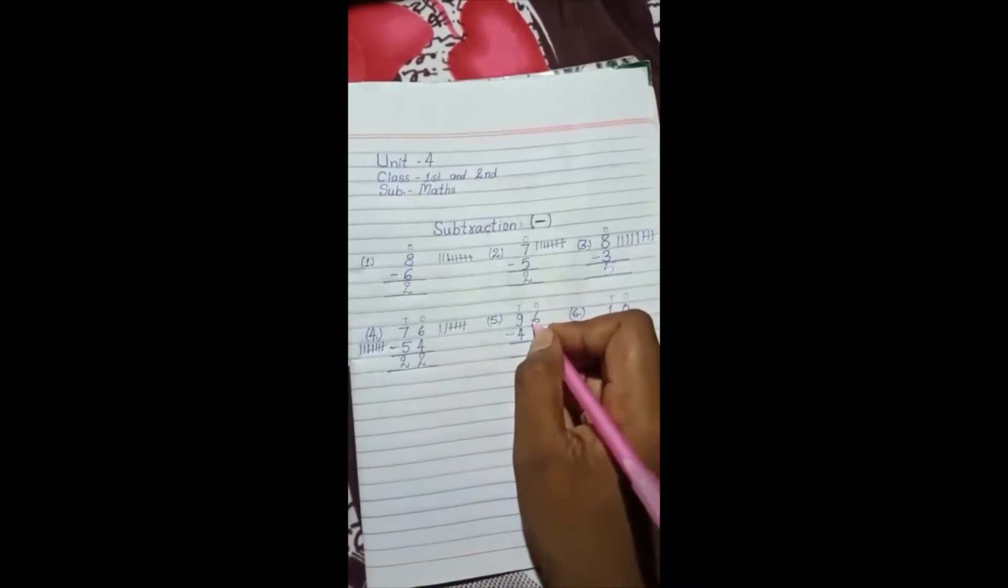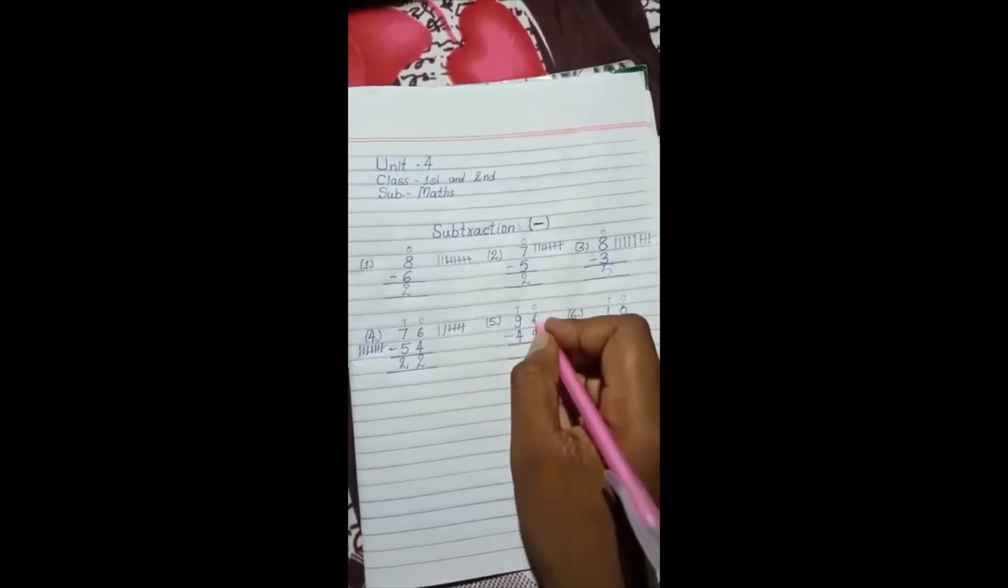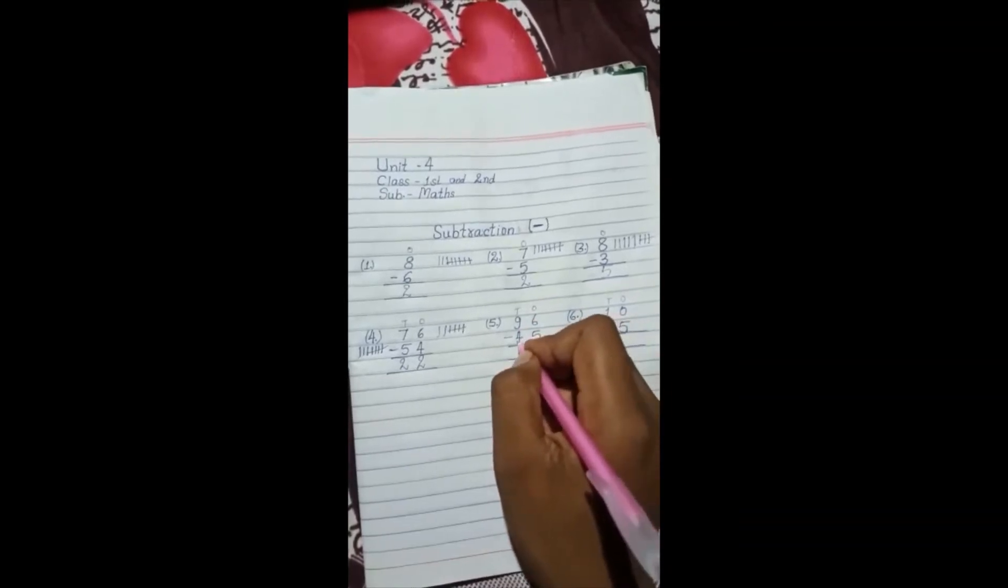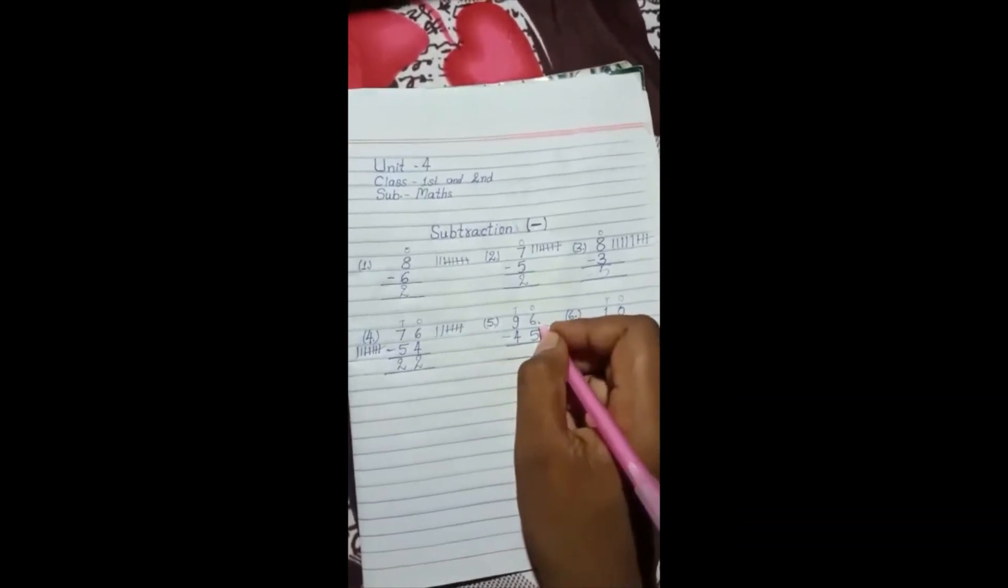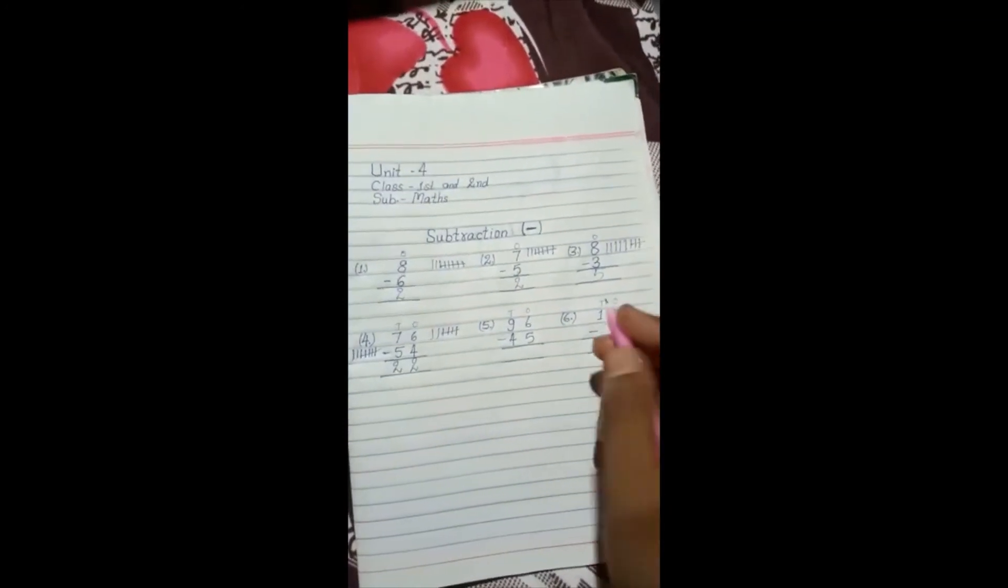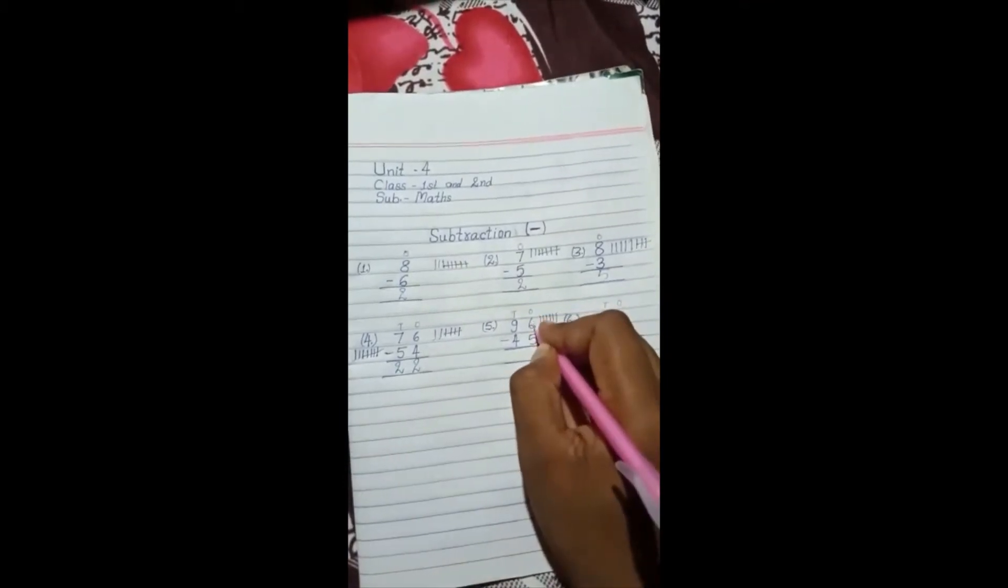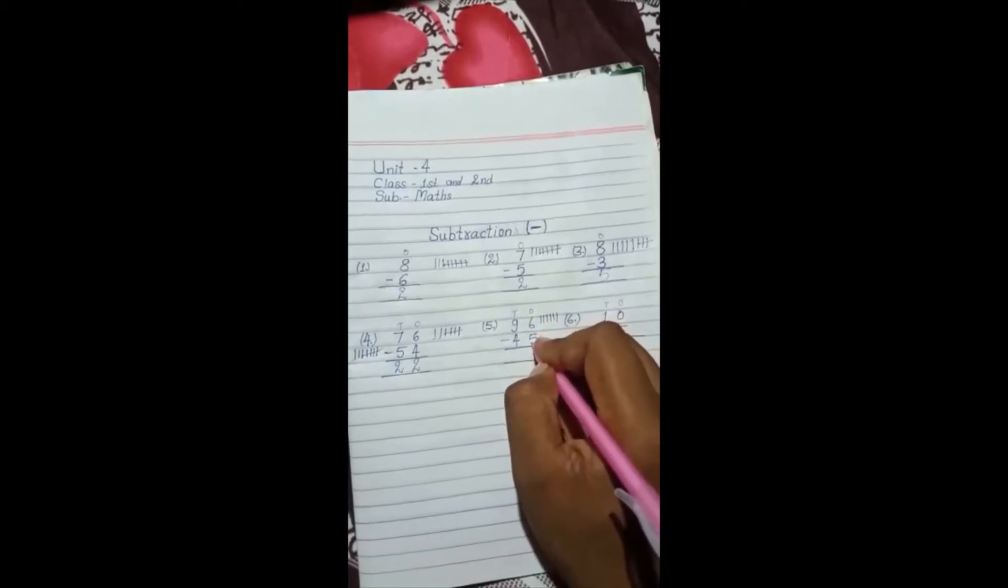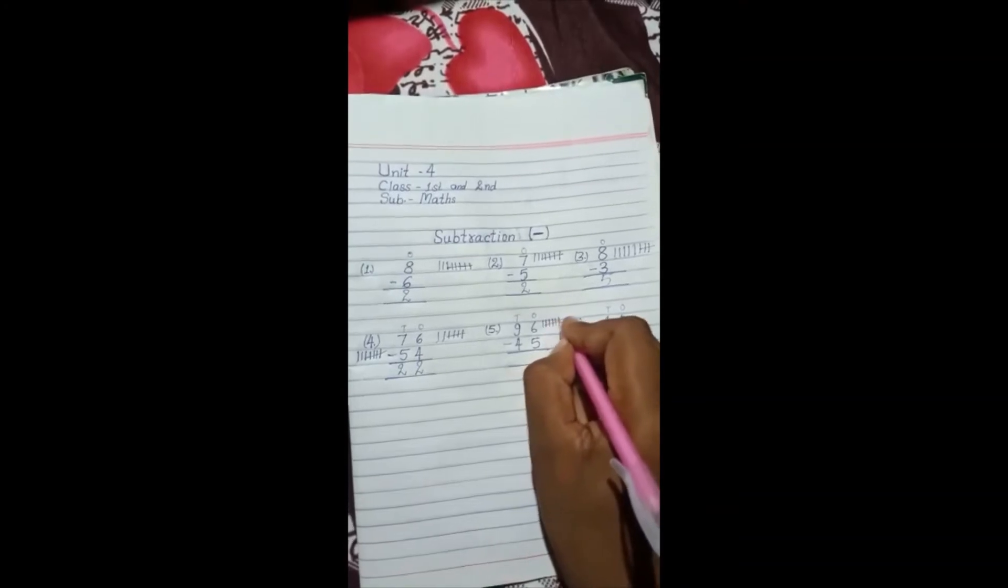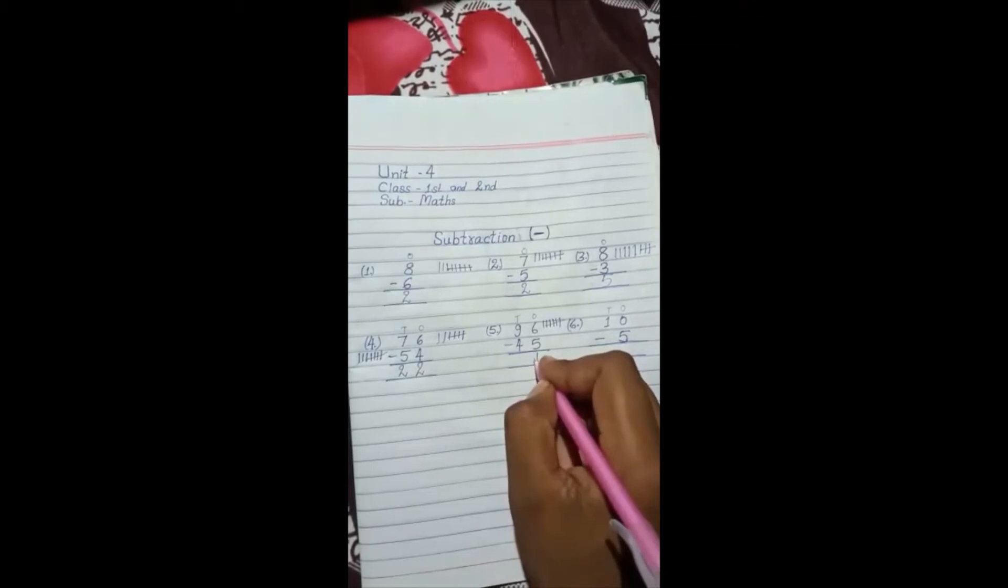Next. 96 minus 45. Ones place is 6, tens place is 9. Tens is 4, ones place is 5. So first, ones place is 6. Draw 1, 2, 3, 4, 5, 6 lines. How do we subtract? 5. Count 1, 2, 3, 4, 5. Cross. How many remain in ones place? 1. So 1.